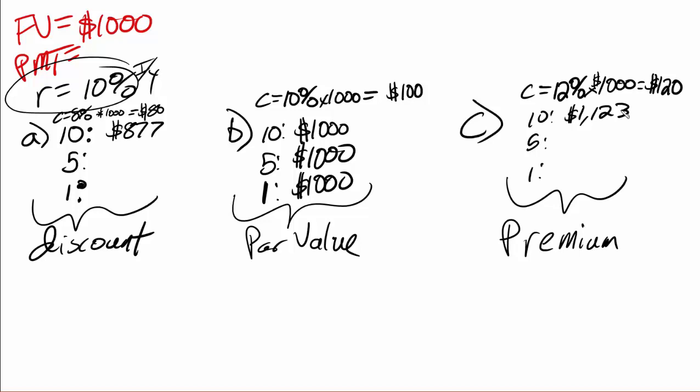Now, what do we think all these bonds are going to be worth at maturity — when there is zero time remaining and the bond has expired? They're all going to equal the future value. Every single one of them is going to have a value of $1,000 at maturity. So we just need to see what happens to the value over time as we approach that point.